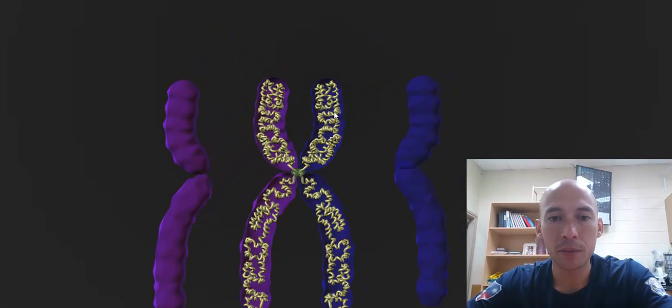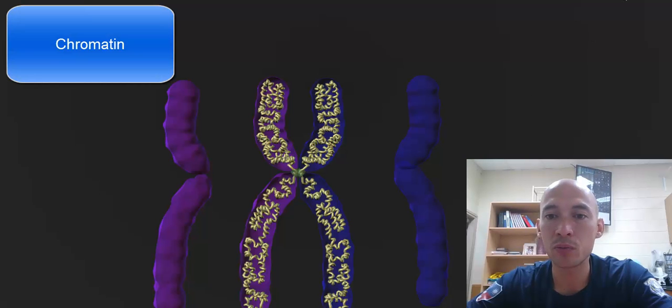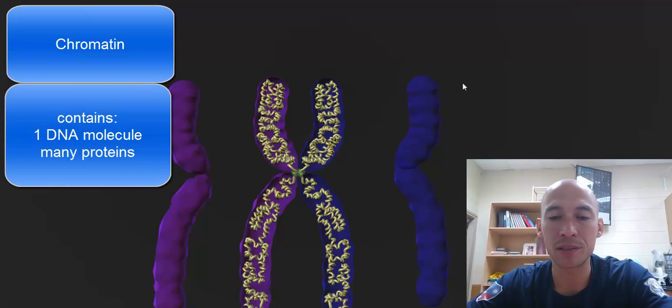A chromosome is made up of material called chromatin, which contains one really long DNA molecule and many proteins as well.